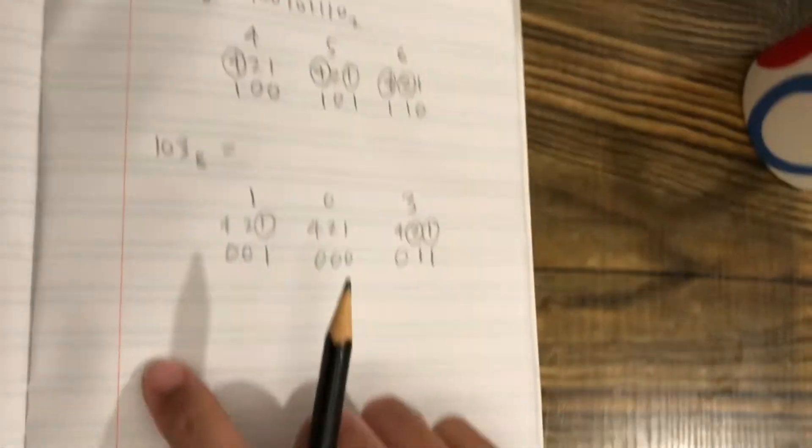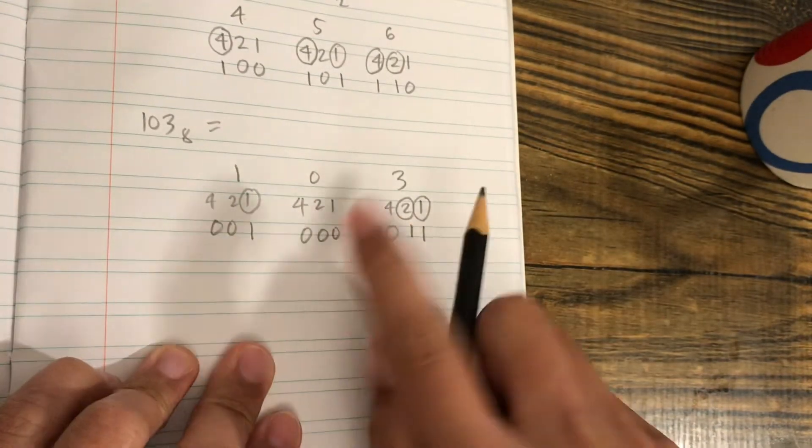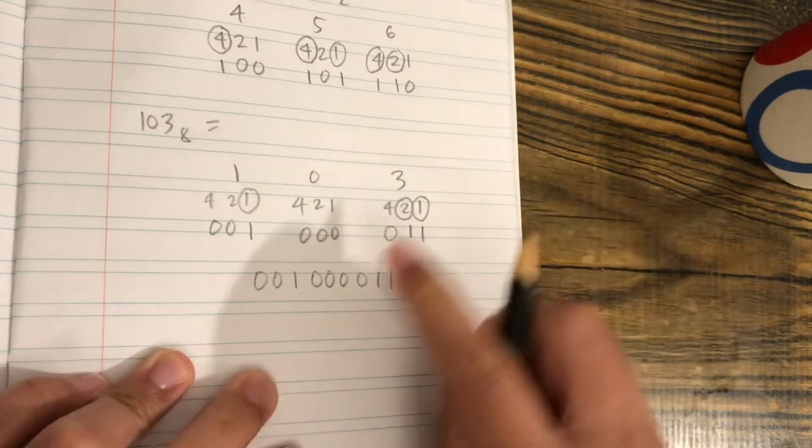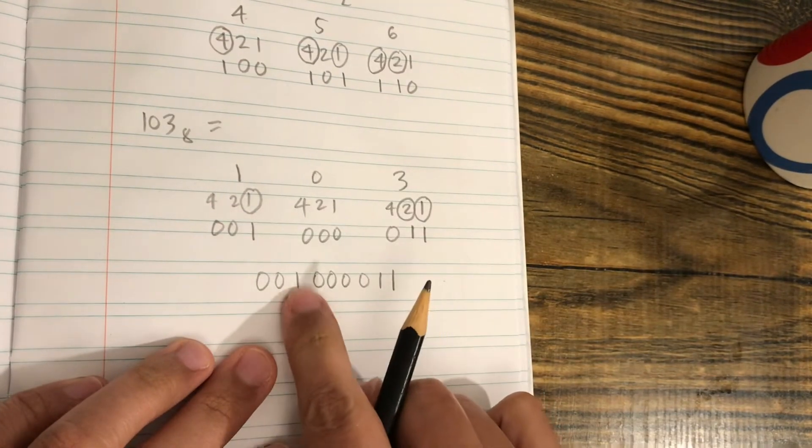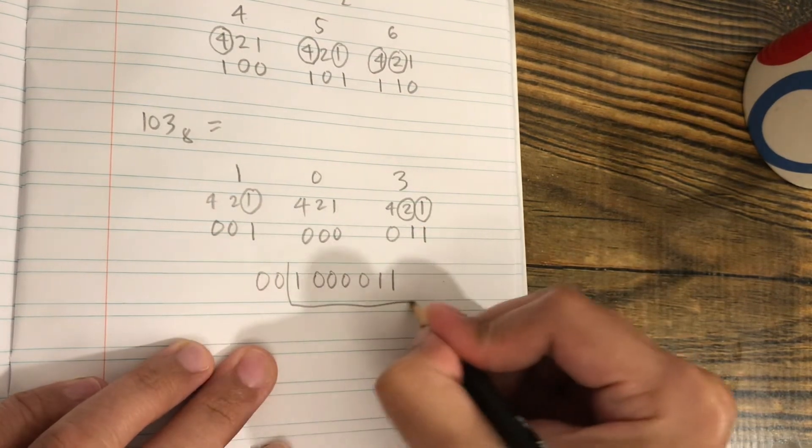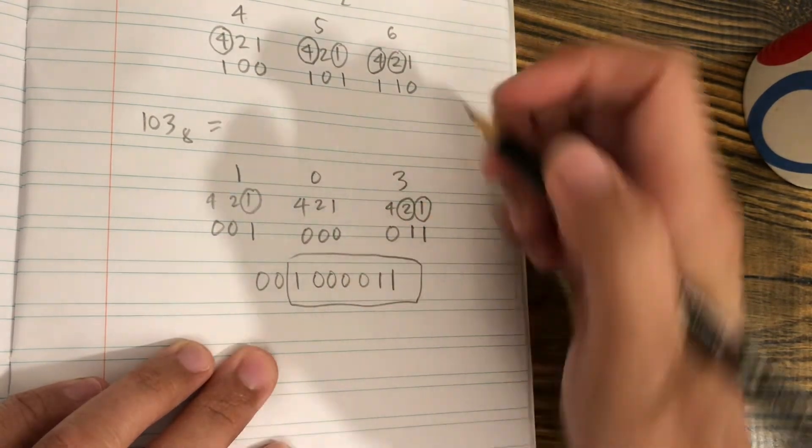This would be our answer. We copy it from the left: 0, 0, 1, 0, 0, 0, 0, 1, 1. But we start writing from 1 and ignore the two zeros in front. So this would be our final answer.